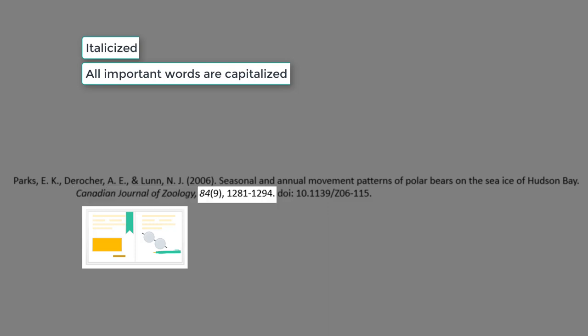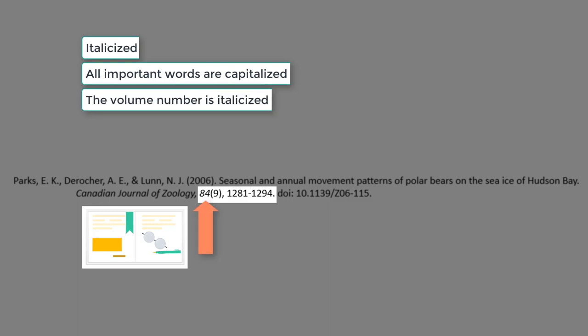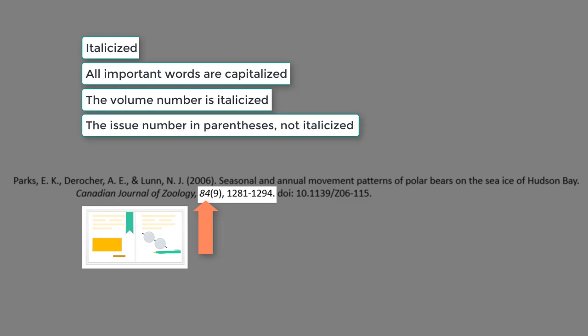The next elements give the specific location of the journal article. The volume number comes first and it's italicized, like the journal title. The issue number comes next, and it is not italicized, and it appears in parentheses. Sometimes no issue number is present, and the item is identified only by the volume number. Next comes a comma and the range of pages where the article appears.